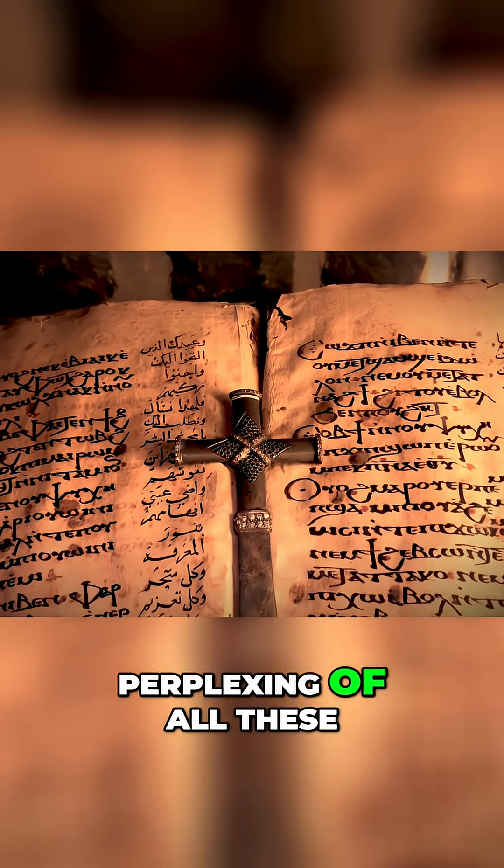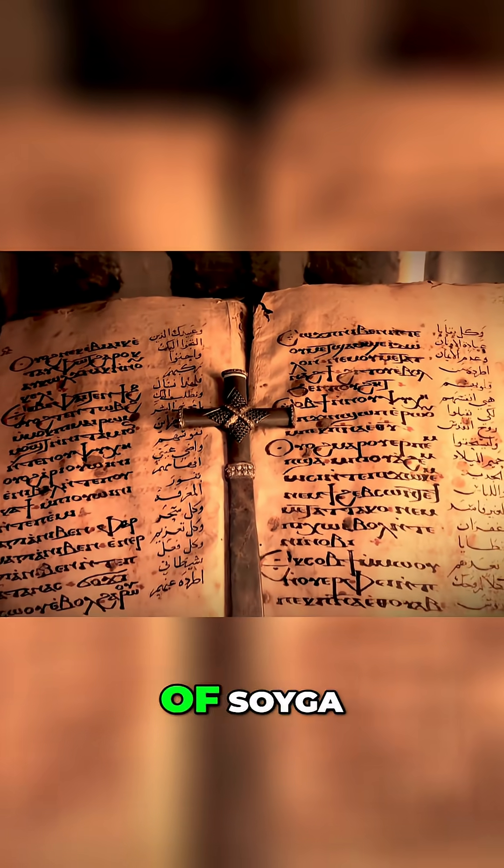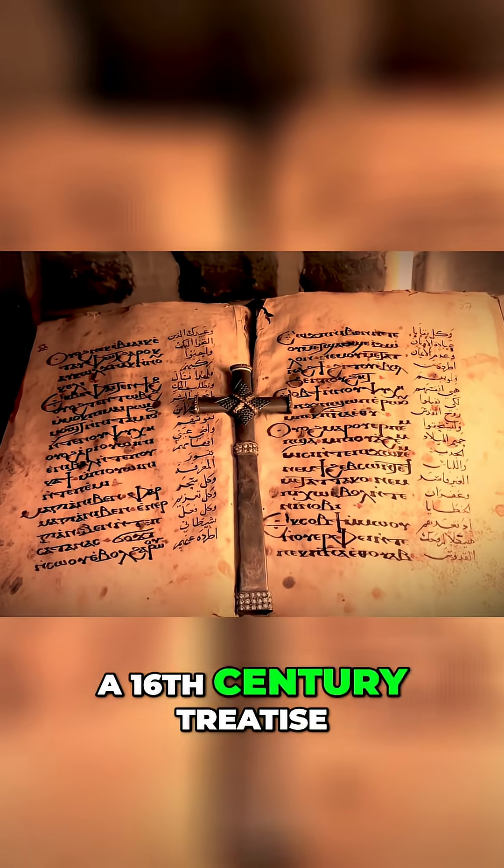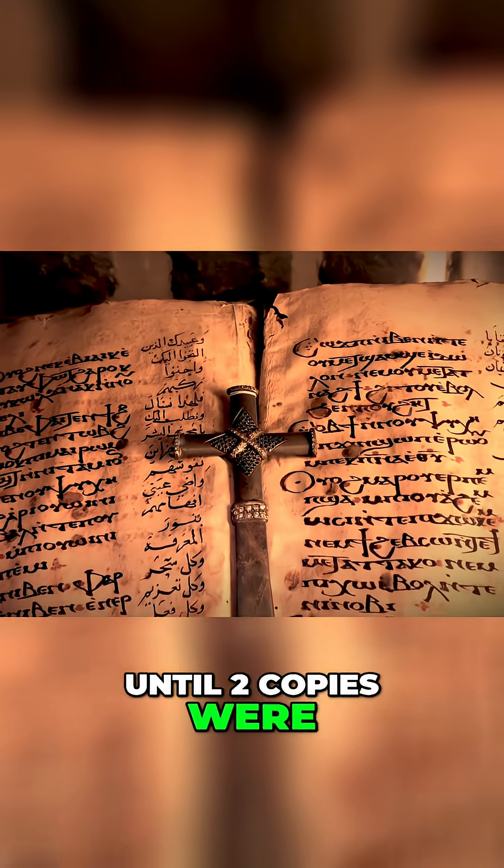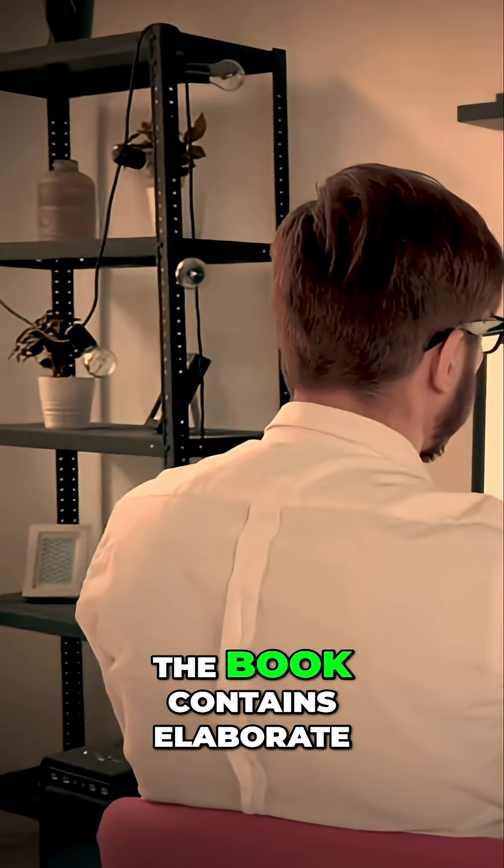Perhaps the most mathematically perplexing of all these texts is The Book of Soiga, a 16th century treatise on magic that was thought lost for centuries until two copies were discovered in 1994.